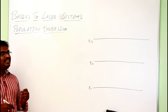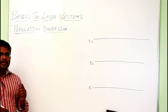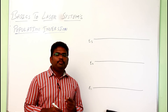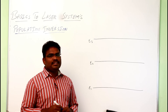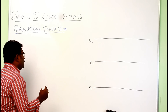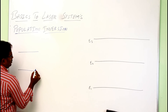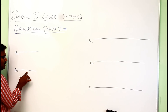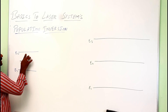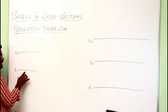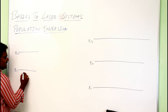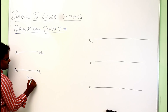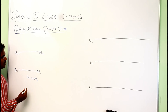The conclusions drawn from Einstein's equations are: first, the amount of energy supplied to the system should be high, and second, we have to maintain population inversion. In general, the number of atoms in the ground state is more than in the excited state — we have more atoms in E1 level and none in E2 unless we supply energy. So in general, n1 is greater than n2.